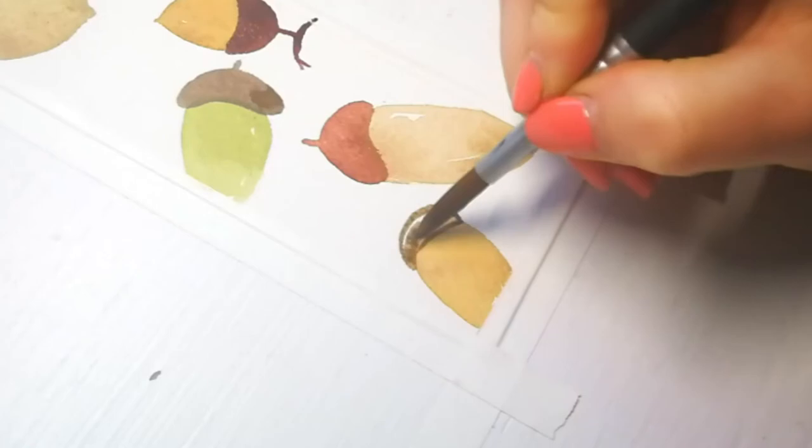Remember, acorns come in all sizes and shapes, so mistakes don't exist. Also, for this bookmark, you can randomly combine your colors for the nuts and its cupule, which makes it even more fun to paint.